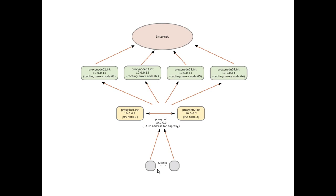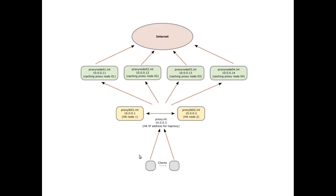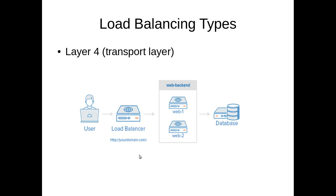The same applies to the backend: as long as at least one server is up, the client gets access without noticing anything. That is the architecture we want to work toward, but not in this video. Implementing it requires at least six machines, which I don't have right now. I am working on a lab for the next video. For now, we are using one load balancer and two backend machines. Once you learn this part, it is easy to jump to the full HA architecture.